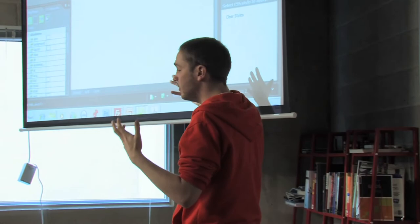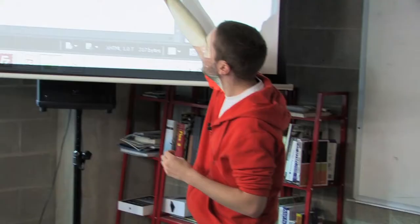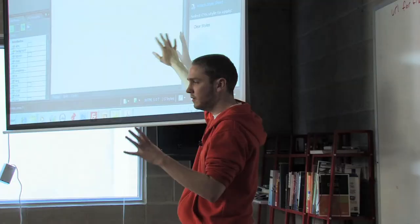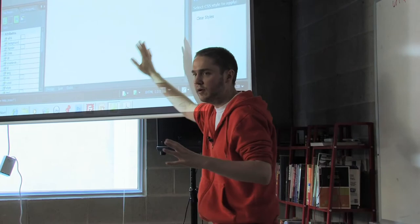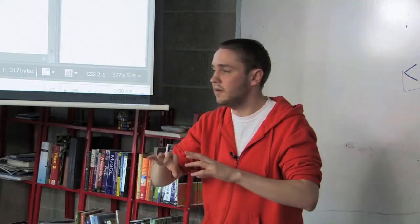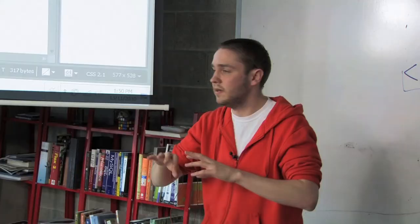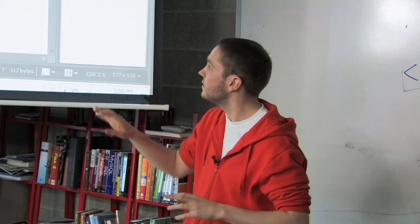So we've got three options: we've got design, split, and code. The design option is what we're looking at right now — we can see there's no HTML code on there at all. But if we slip down to the code option, we can see that by default, just opening a brand new document with nothing there, there's already a whole bunch of code going on in the background. Hopefully you can recognize those basic tags that James mentioned at the very beginning, which are necessary for all HTML documents.